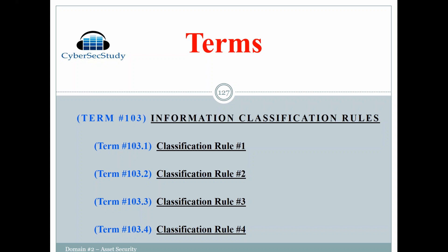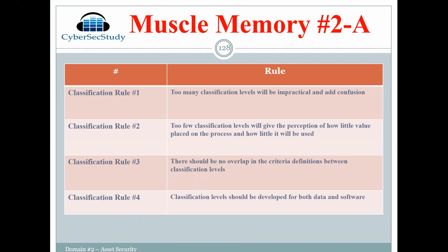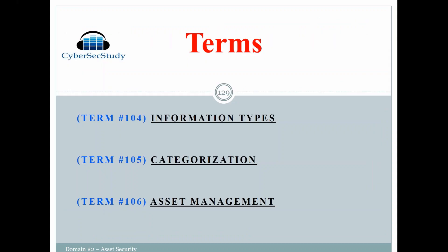Classification rule number four: classification levels should be developed for both the data and for software — you want to classify your applications as well. This is all information that could be used in our BIA to help us identify if there's a business process that uses critical information or applications. Examples of information types include medical information, PII, and payment card information. These types of information can be grouped into information classification categories depending on how sensitive and critical they are to an organization or a federal agency.